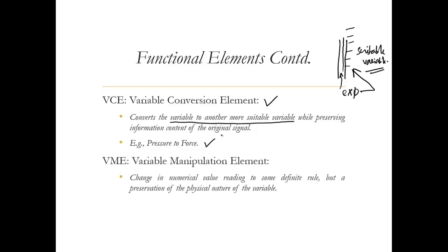The variable manipulation element changes the numerical value according to a definite rule but preserves the physical nature of the variable. We will explain this more with a suitable example of a pressure gauge, and first look at some sensors to understand how energy conversion takes place.